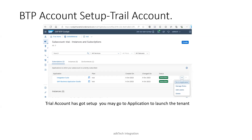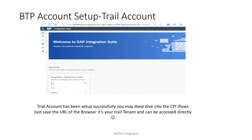This way, the trial account has been set up. You can go directly into Integration Suite, or click the three-dot menu and select Go to Application. It will open a new window. Save the URL in your browser — this is your tenant URL to access your trial account. Thank you. All the best.